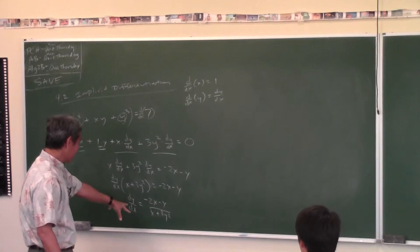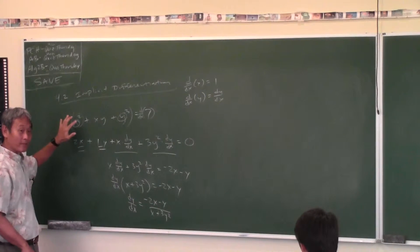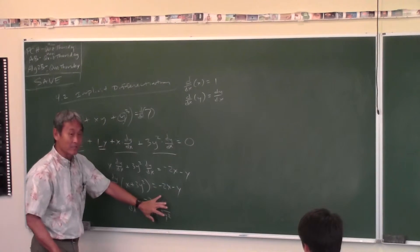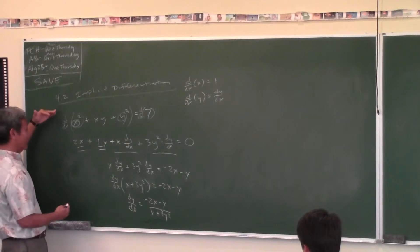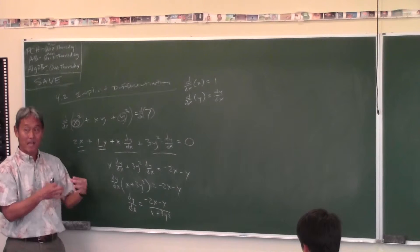So how do I solve for dy dx? I'll underline the two terms that have dy dx in it. You keep it on this side of the equation. Keep it on the left. And then what do you think I'm going to do with these two terms? Move them to the other side of the equation. So you get negative 2x minus y.